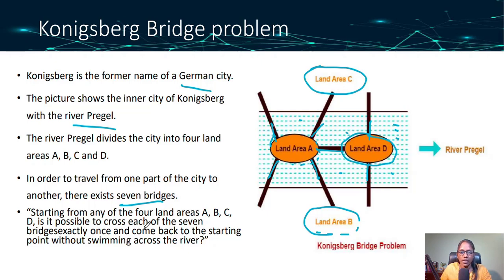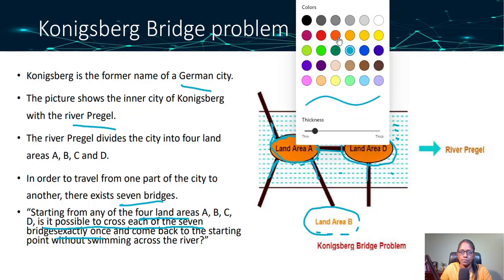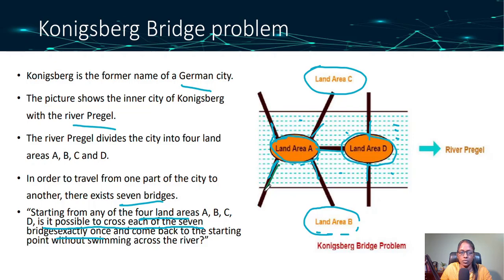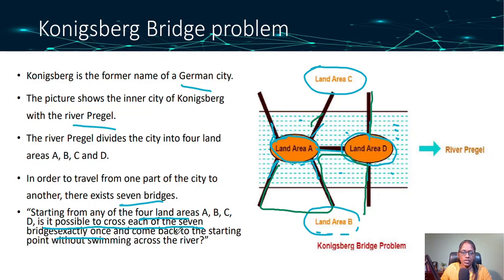Starting from any of the four land areas — A, B, C, or D — is it possible to cross each of the seven bridges exactly once? If I go from here to here, I can't come back, and if I come back I can't travel to land C.